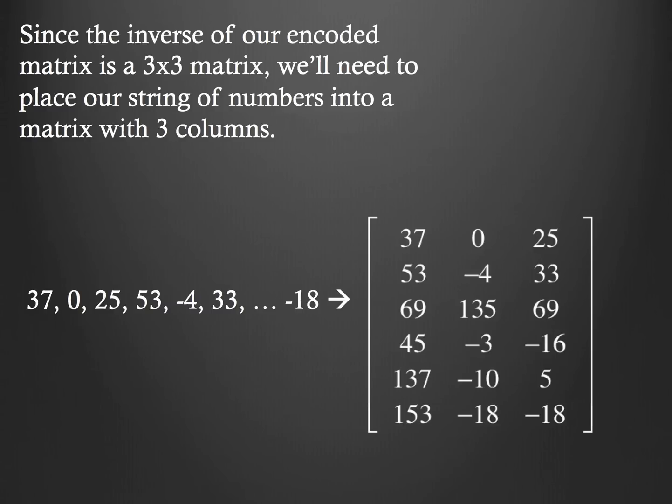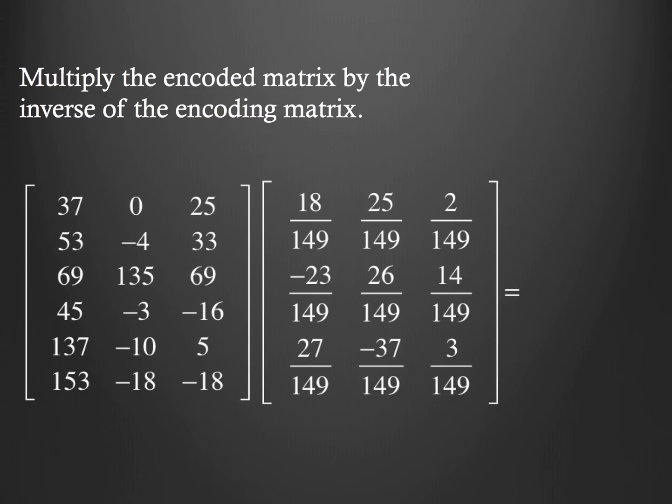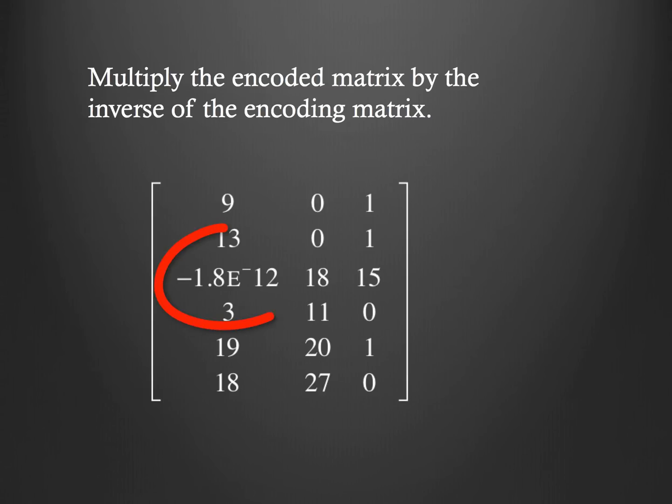Now, the next thing that we're going to do, here's where the grossness comes in. We're going to need to multiply that encoded matrix by the inverse of the encoding matrix. So, ugh, yeah, yuck, gross. When we multiply those two things together, look at the grossness that we come up with. Now, of course, we're going to use our technology to help us figure this out, and then, bam, check it out. Now, when I did this on my calculator, I got this funky thing here in one of the entries. I got negative 1.8, and then this e with negative 12. So, I've got to understand what that means.